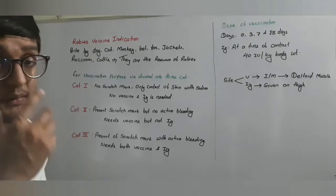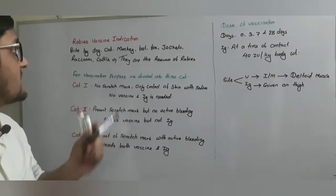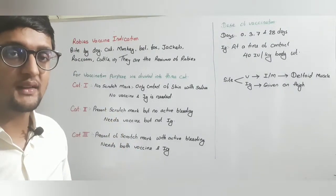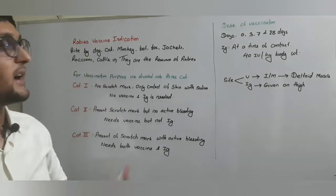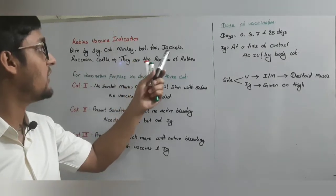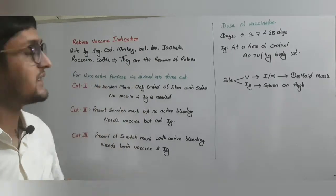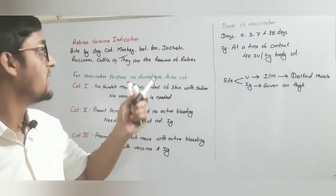Let's start. Indication of the rabies vaccine. The indication of the rabies vaccine is the bite mark after the bite by any animal like dog, cat, monkey, bat, fox, jackals, raccoon, cattle. They are the reservoir of the rabies.